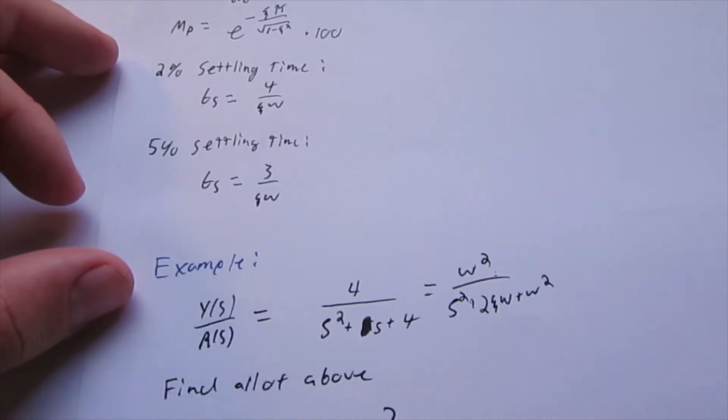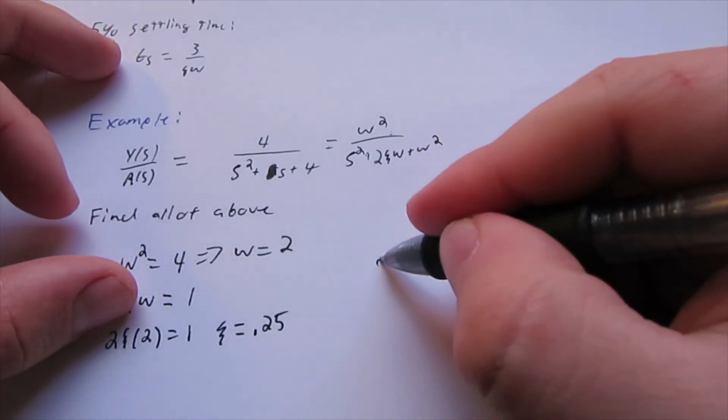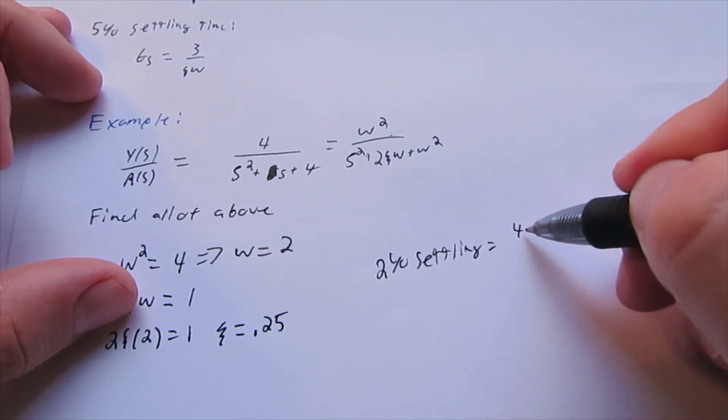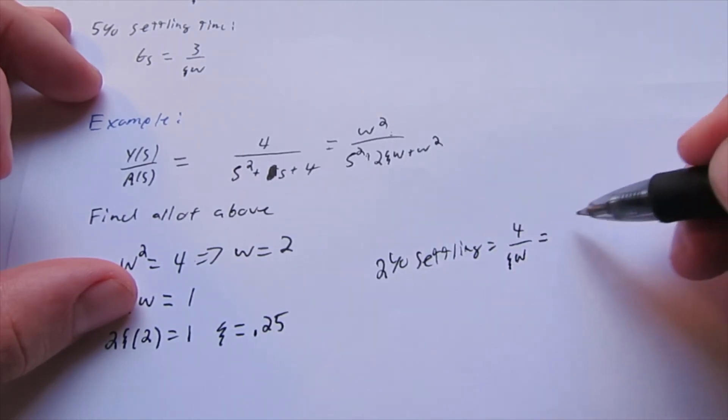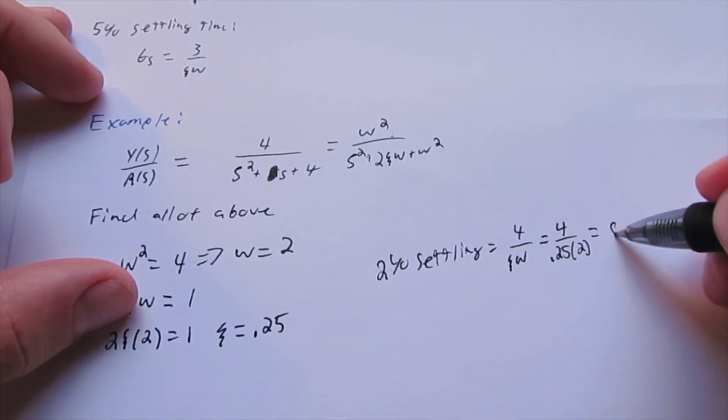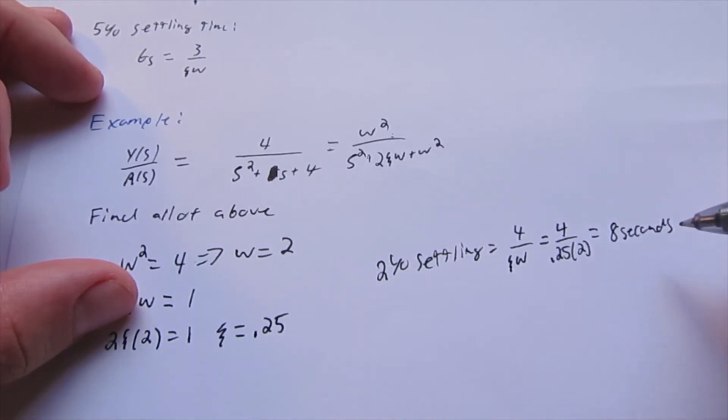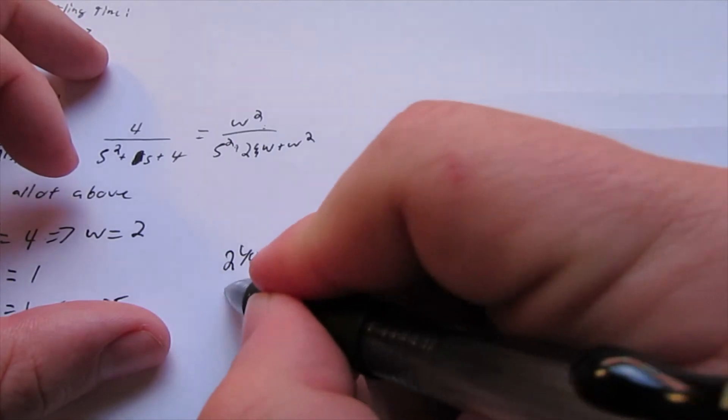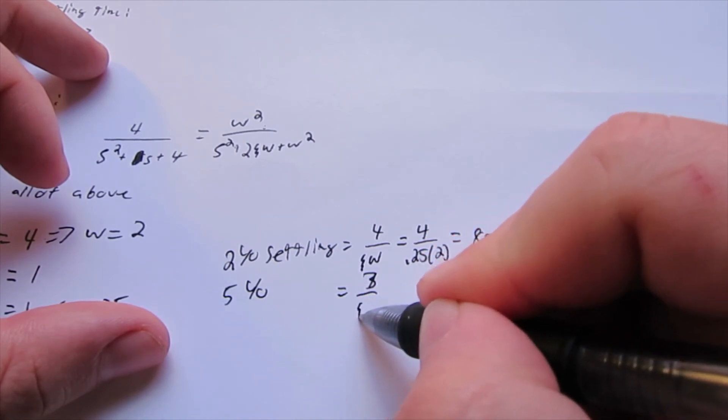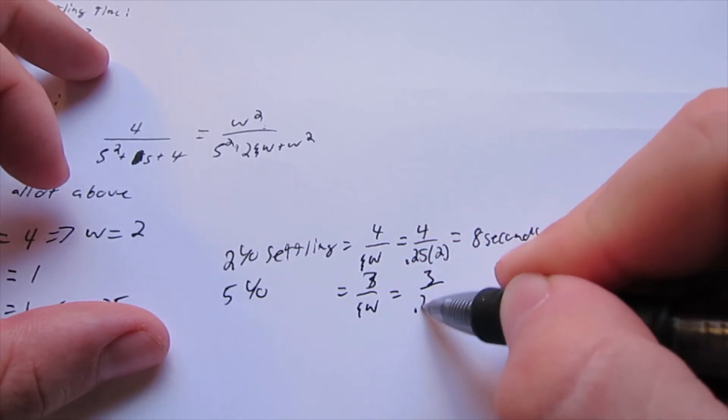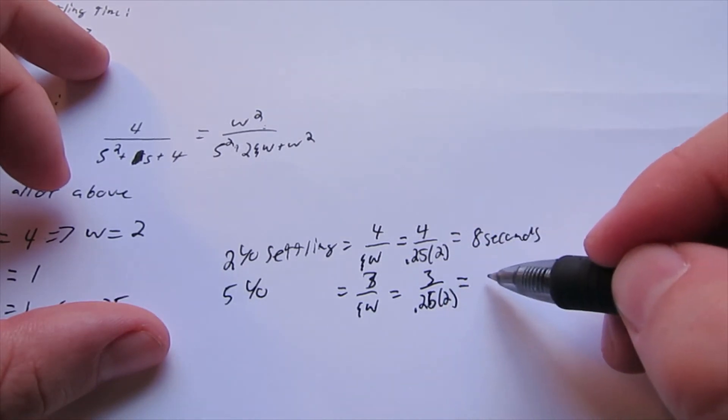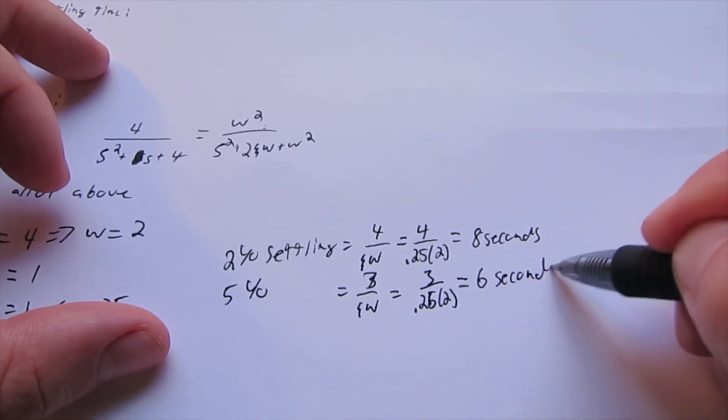Okay, now we have enough to calculate settling times. So we got 2% settling equals 4 divided by zeta omega equals 4 divided by 0.25 times 2. That equals 8 seconds. And then we have our 5%, which equals 3 divided by zeta omega, which equals 3 divided by 0.25 times 2, and that equals 6 seconds.